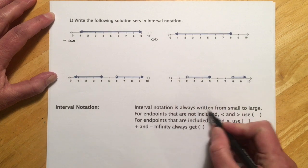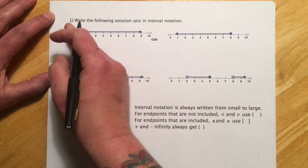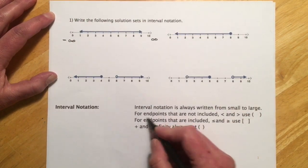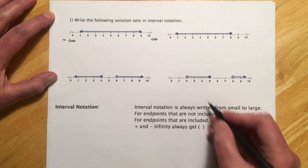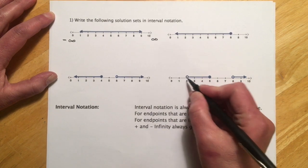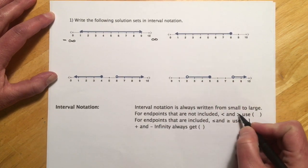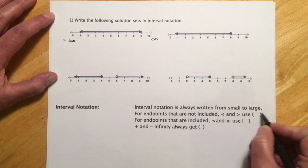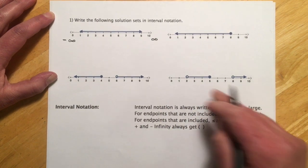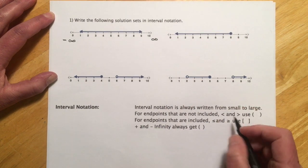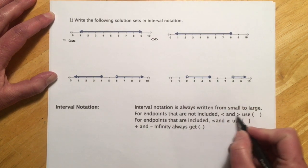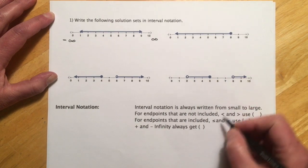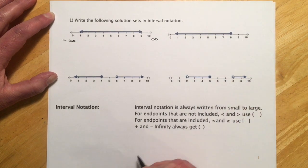Interval notation is always written from small to large, or from left to right on the number line. For endpoints that are not included — the open dots and things that come from less than's and greater than's but no equals — we're going to use parentheses.